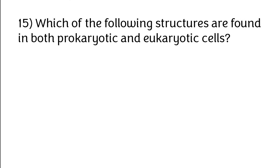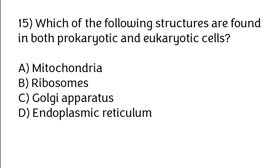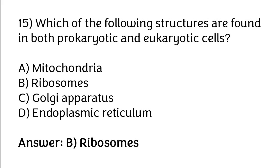Which of the following structures are found in both prokaryotic and eukaryotic cells? Options: mitochondria, ribosomes, Golgi apparatus, endoplasmic reticulum. The correct answer is option B — ribosomes are found in both prokaryotic and eukaryotic cells.